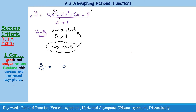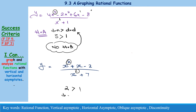Example 2: y equals x squared plus x minus 2 divided by x plus 7. The degree of the numerator is 2, which is bigger than the degree of the denominator, which is 1. Again, the degree of the numerator is bigger than the degree of the denominator, so no horizontal asymptote. This was Case 1.